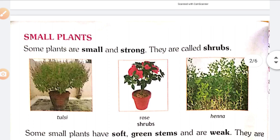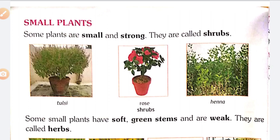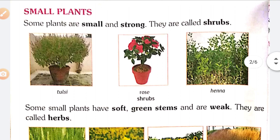Next, small plants. Some plants are small and strong — they are called shrubs. Examples: Tulsi, Rose, Hina. Shrubs look like a bush. Looking at these three examples, you can see they appear like a bush, and with the help of that we can say it is a shrub.